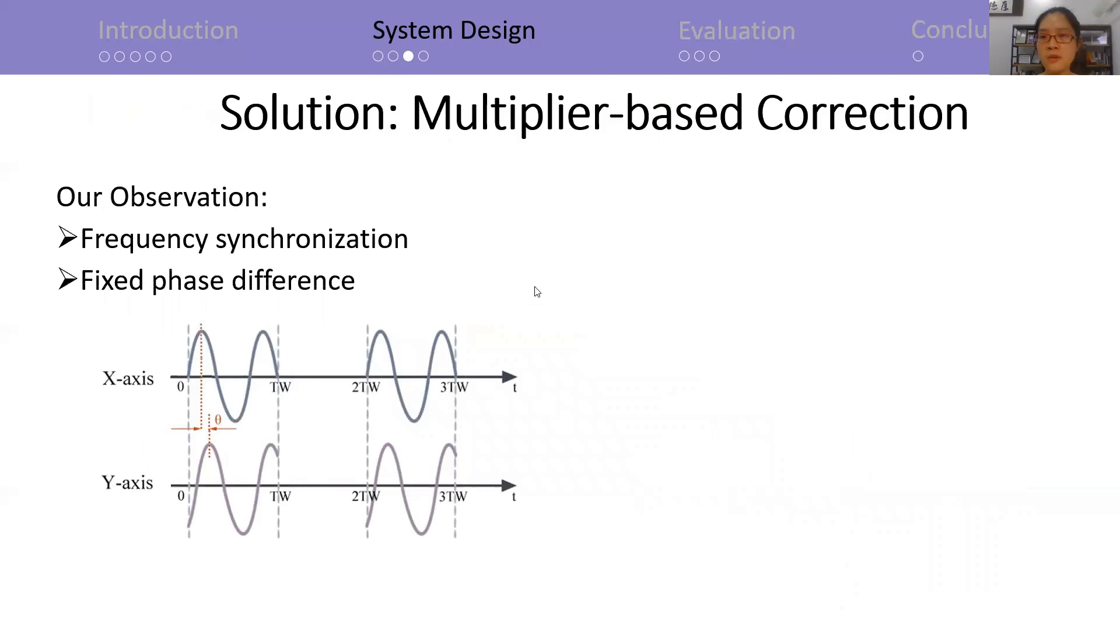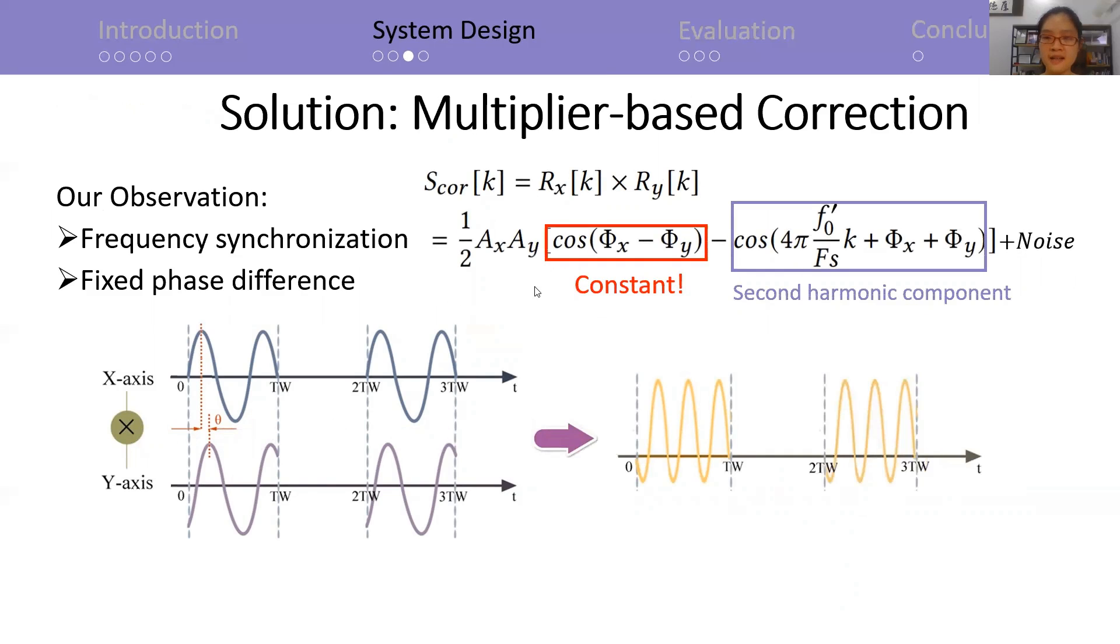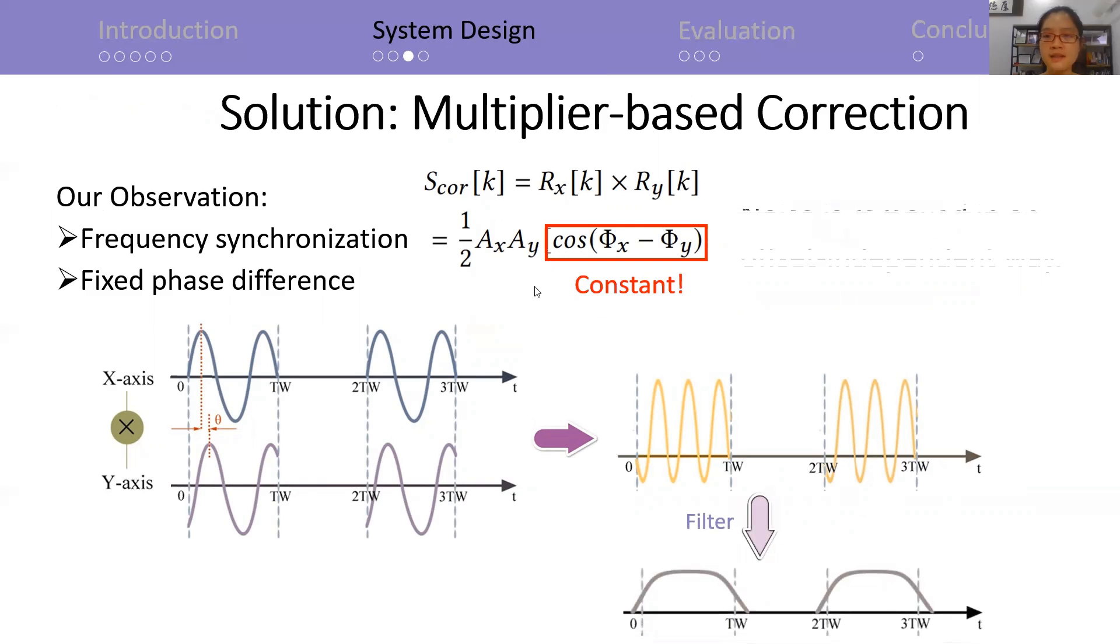Under this condition, we observe that two axes of the gyroscope share the same response frequency and follow a fixed phase difference. We apply a multiplier here. The result includes a constant, a second harmonic component, and high-frequency noise. The latter two can be removed by a filter. As a result, we obtain an ILO-free channel.